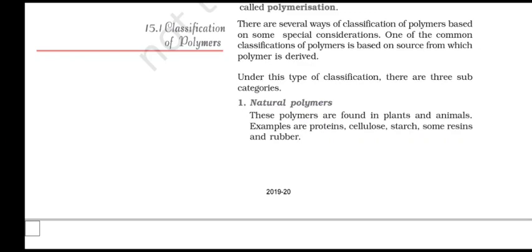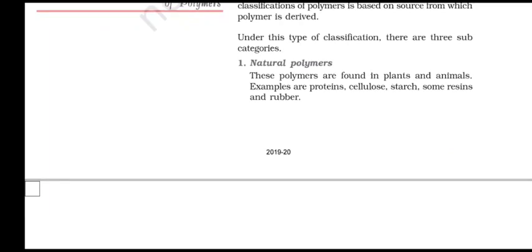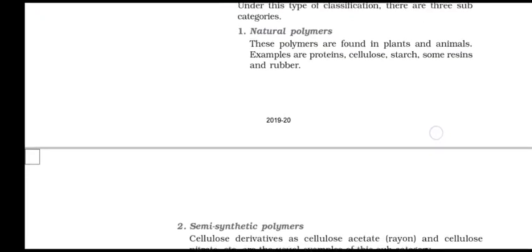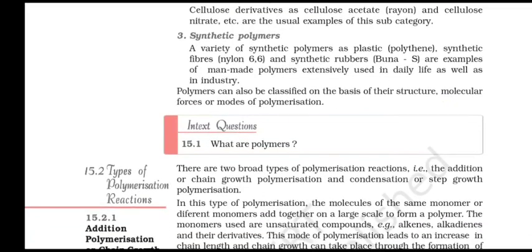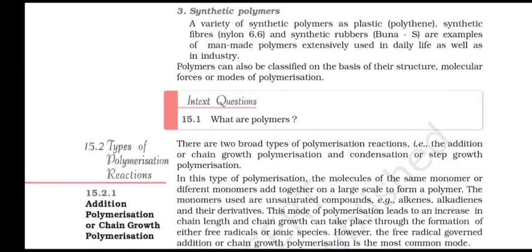Classification of polymers: there are several ways of classifying polymers. One common classification is based on the source from which the polymer is derived. Under this type there are three subcategories: natural polymers, which are found in plants and animals — examples include proteins, cellulose, starch, some resins and rubbers; semi-synthetic polymers, such as cellulose acetate and cellulose nitrate; and synthetic polymers, such as plastics, synthetic fibers like Nylon 6,6 and synthetic rubbers like Buna-S, which are examples of man-made polymers.